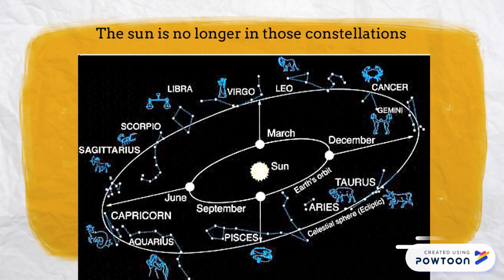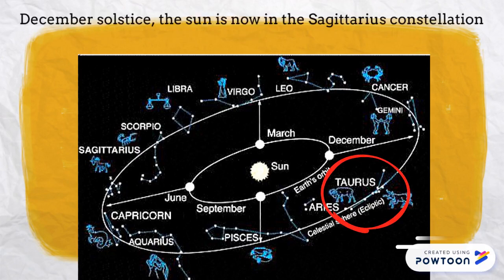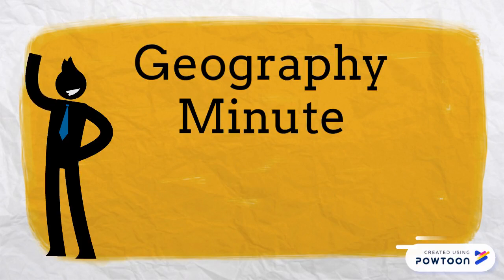Now the sun is no longer in those constellations. At the June solstice today, the sun is in the Taurus constellation, and at the December solstice, the sun is now in the Sagittarius constellation. Well, I hope all of this has helped, because that's your Geography Minute.